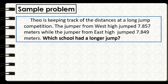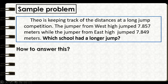Let's take this sample problem. Theo is keeping track of the distances at a long jump competition. The jumper from West High jumped 7 and 847 thousandths meters, while the jumper from East High jumped 7 and 849 thousandths meters. Which school had a longer jump? To answer this problem, we will apply the three basic steps.